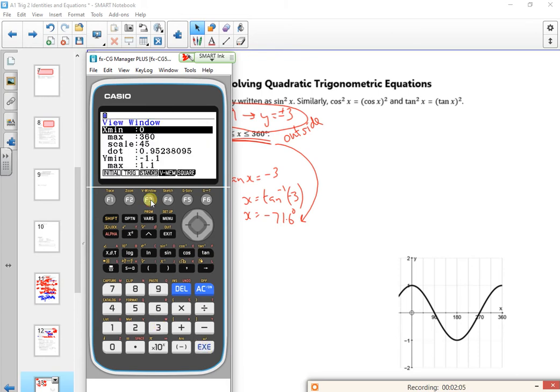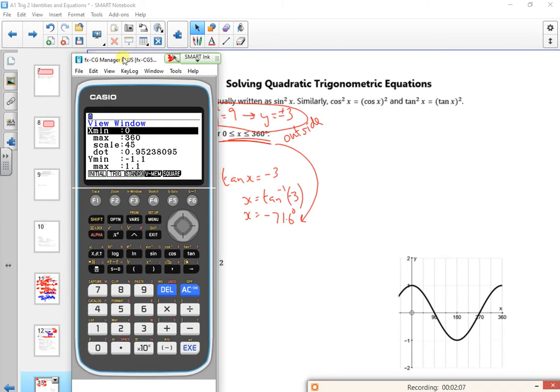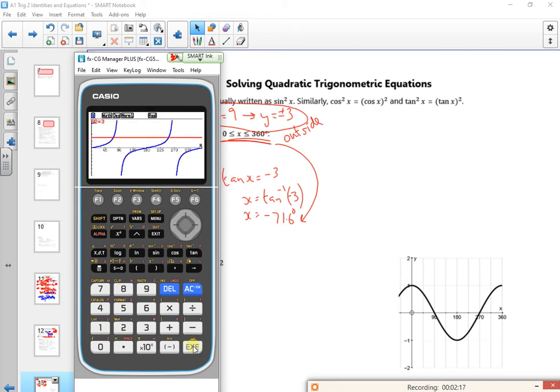I'm going to do it for 3. So I need to fiddle with my axis, so it's 0 to 360. Yep, so that's okay. But my y axis, I'm going to do about minus 8. So 8 gives me a picture. There.